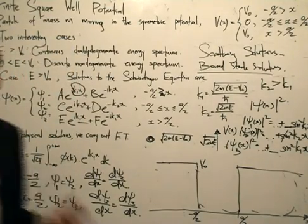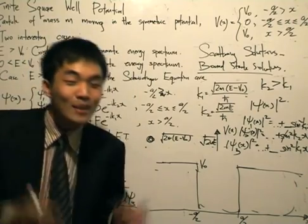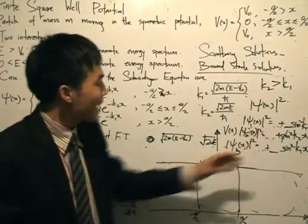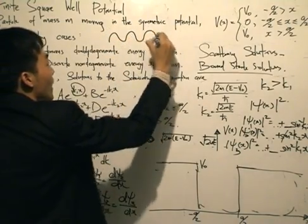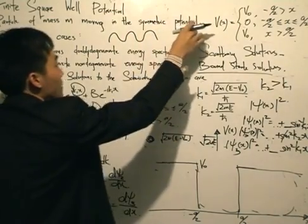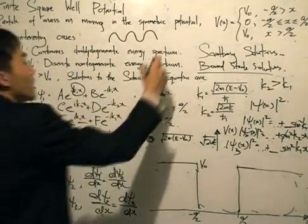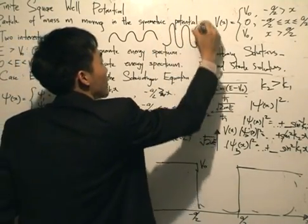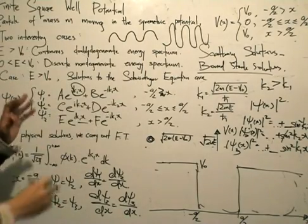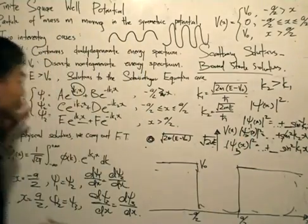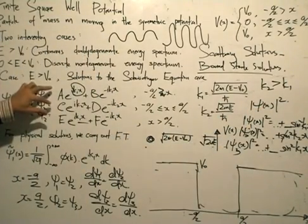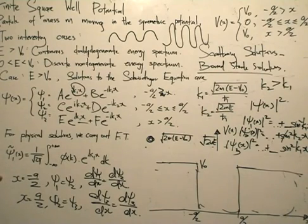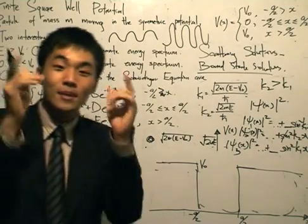That's only half the story — the other half involves the amplitude of the trigonometric functions, which dictates the amplitude of the probability density. If the amplitude of one sine term is greater, the graph's peak will be higher. To calculate amplitudes rigorously, you'd need to square each psi 1, psi 2, psi 3 and rearrange for coefficients A, B, C, D, E, F using the continuity conditions — a long process. Instead, let's draw from what we know about the potential barrier.